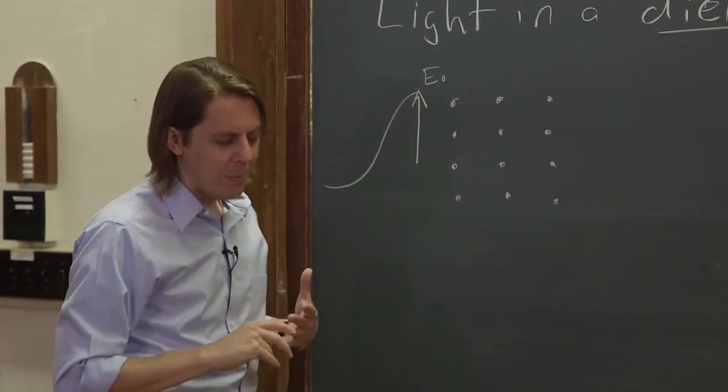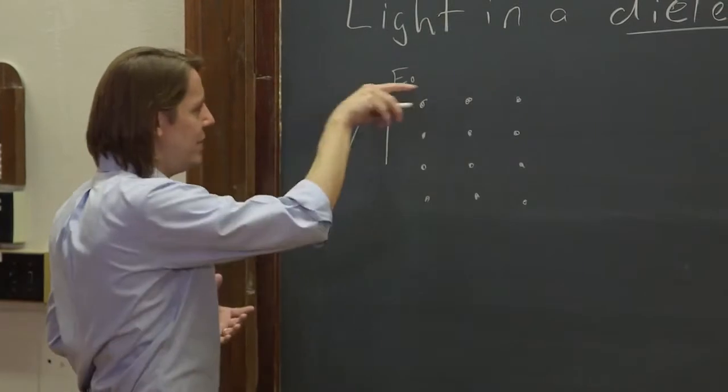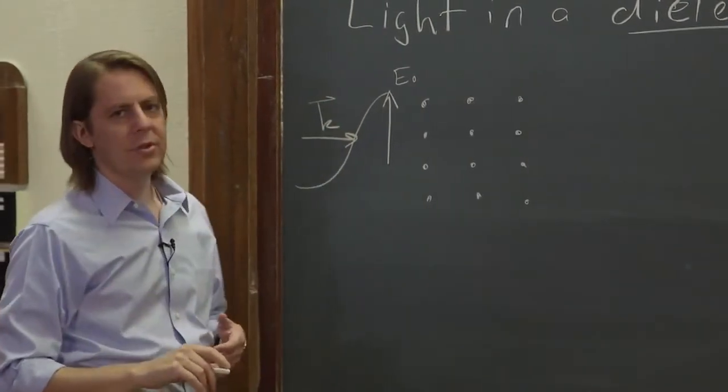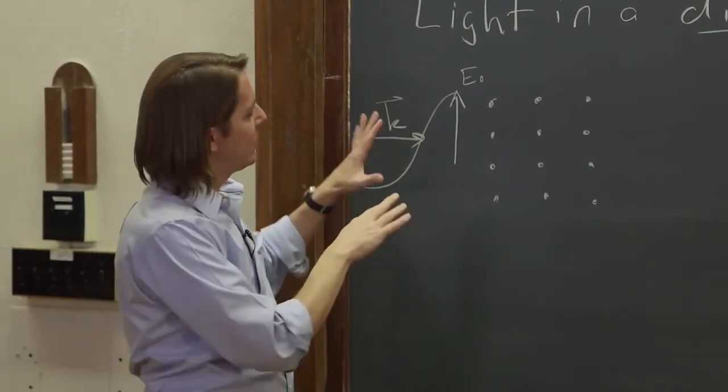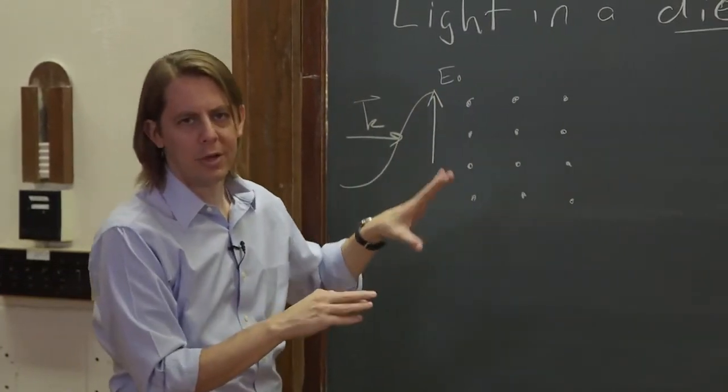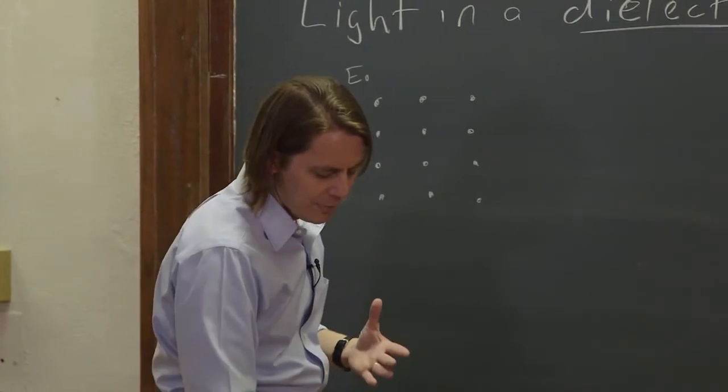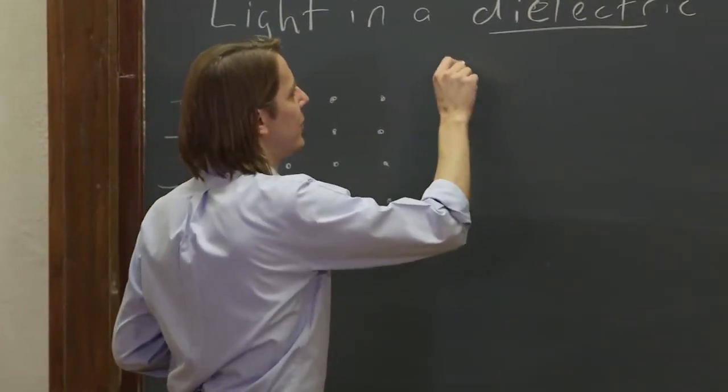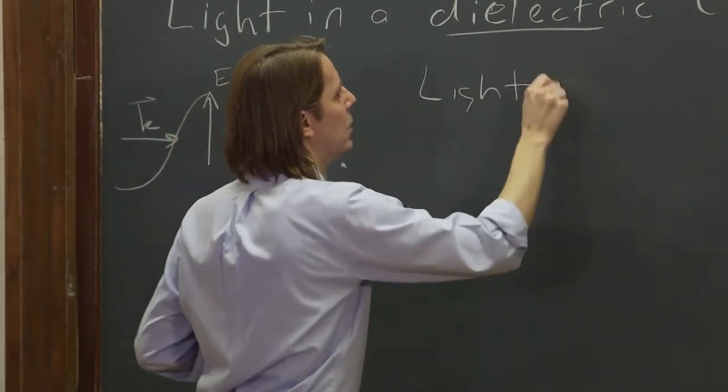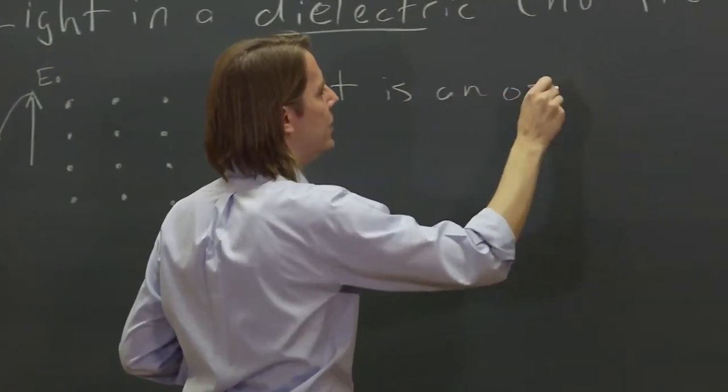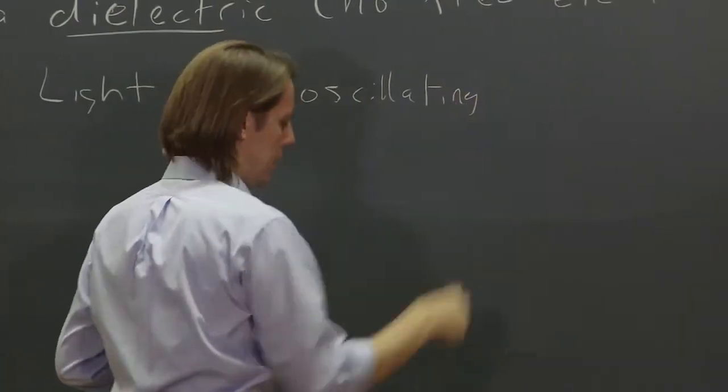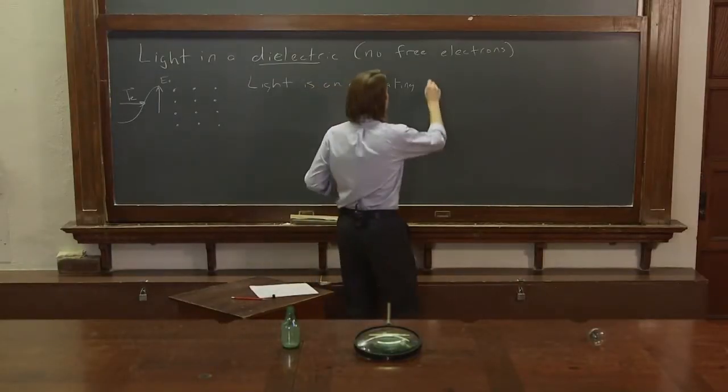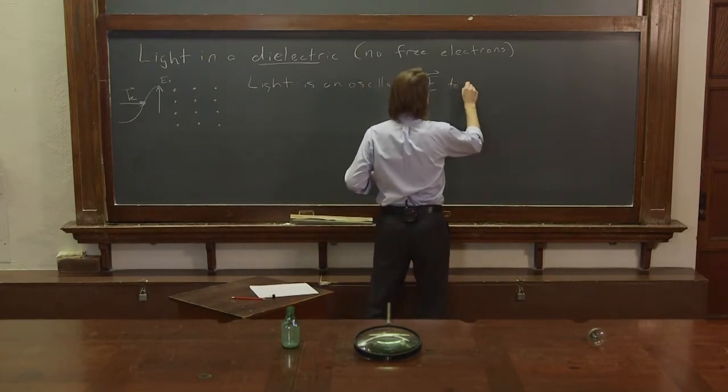So we're going to think about this microscopically. We have the E field this way. We have the K vector this way. And we're just going to consider the E field because the interaction of light with most ordinary types of matter, like a dielectric, is mostly due to the E field. The B field's effect are not quite as big.